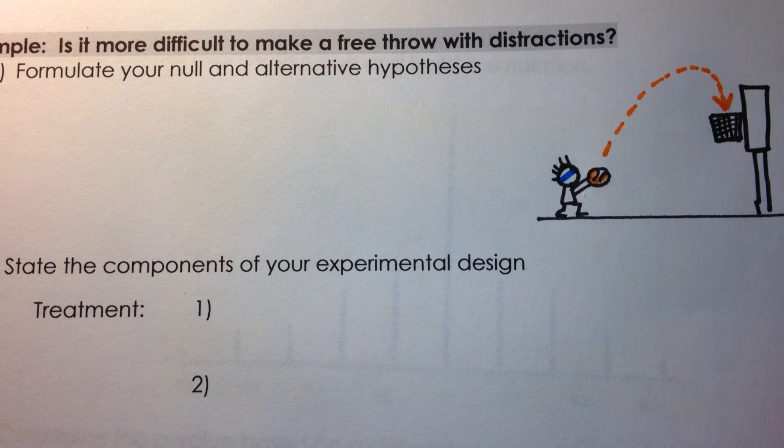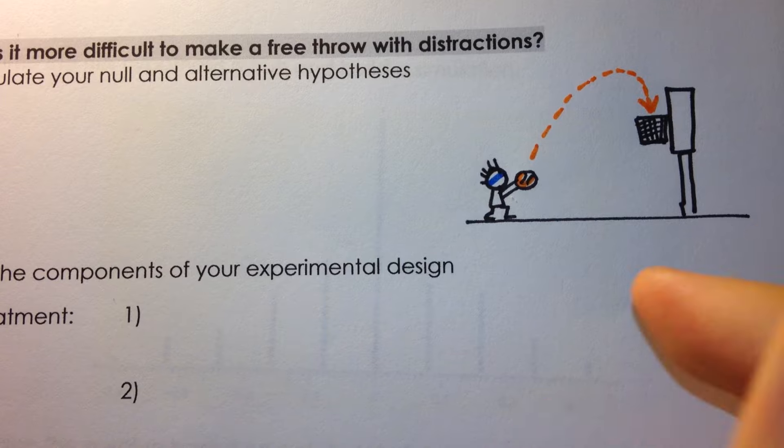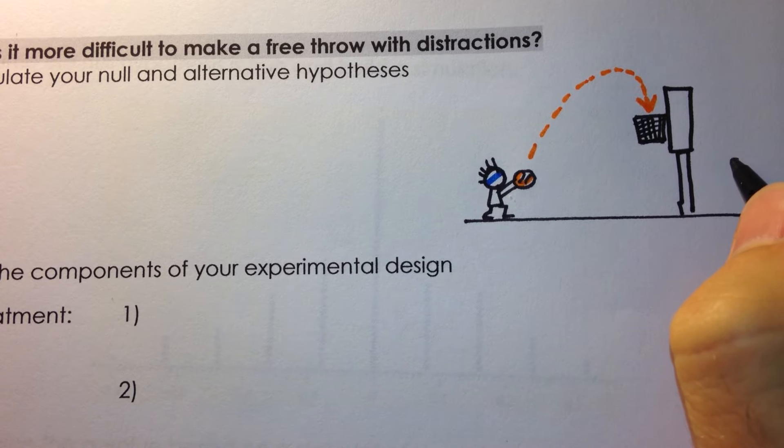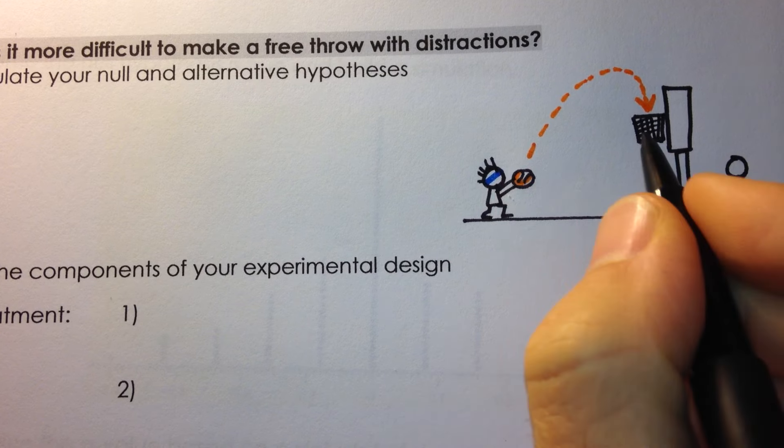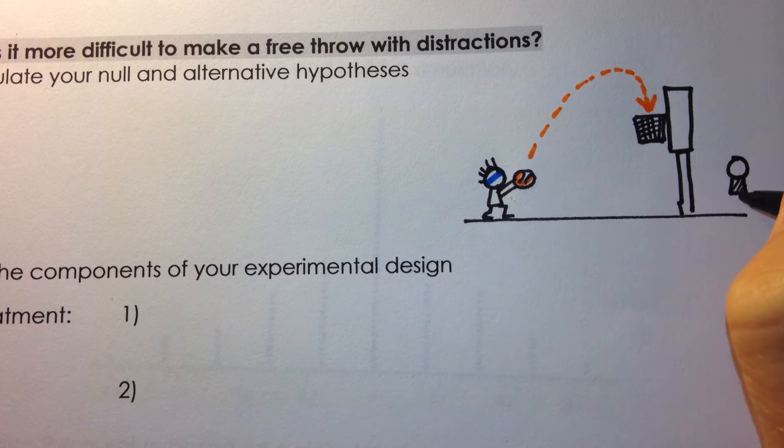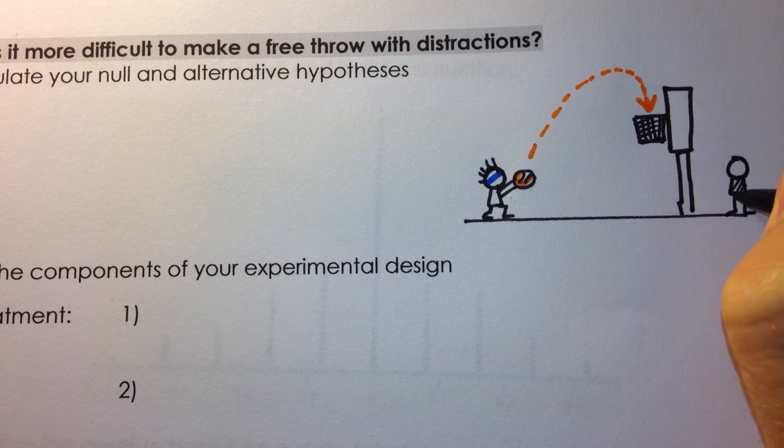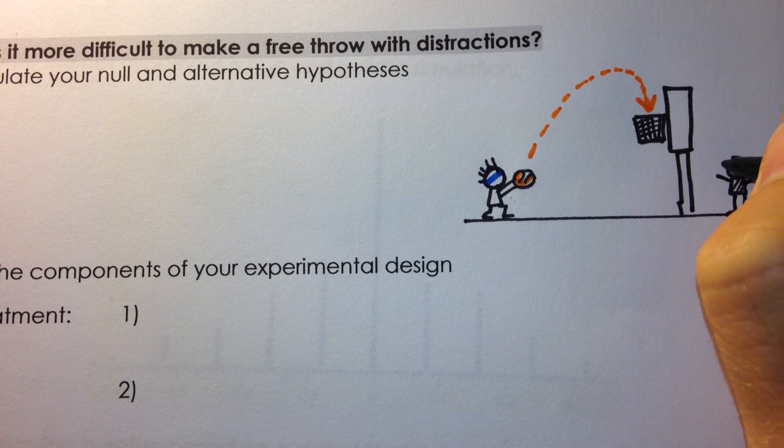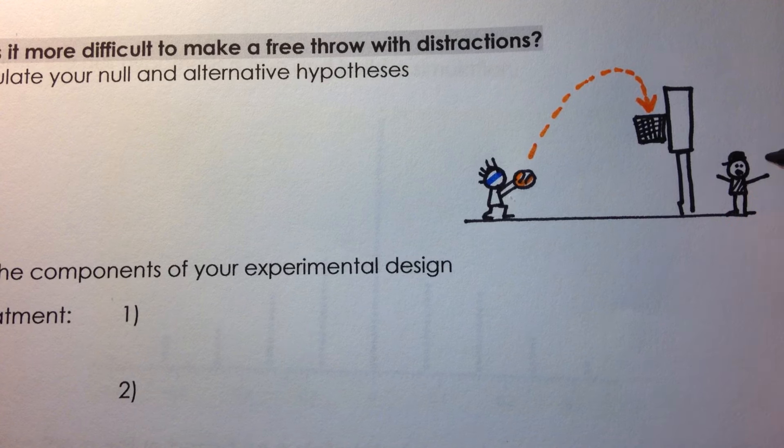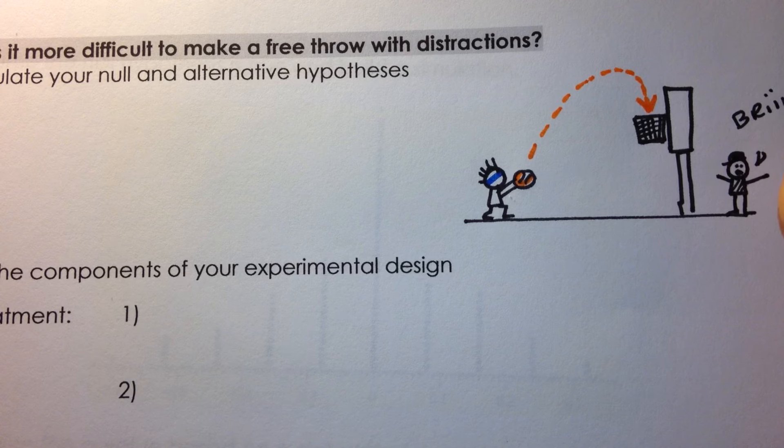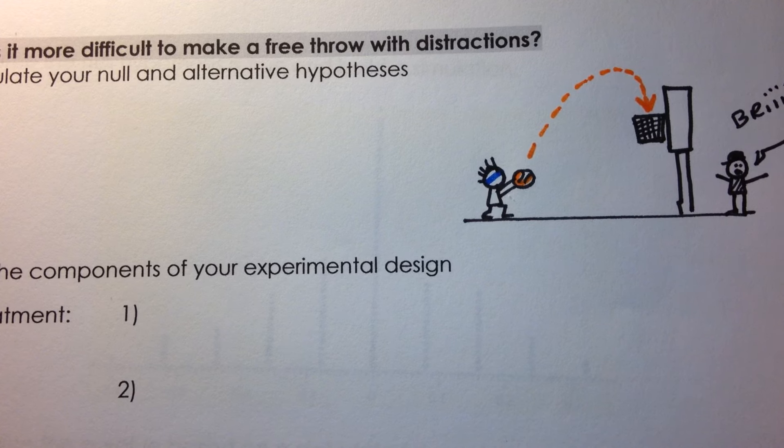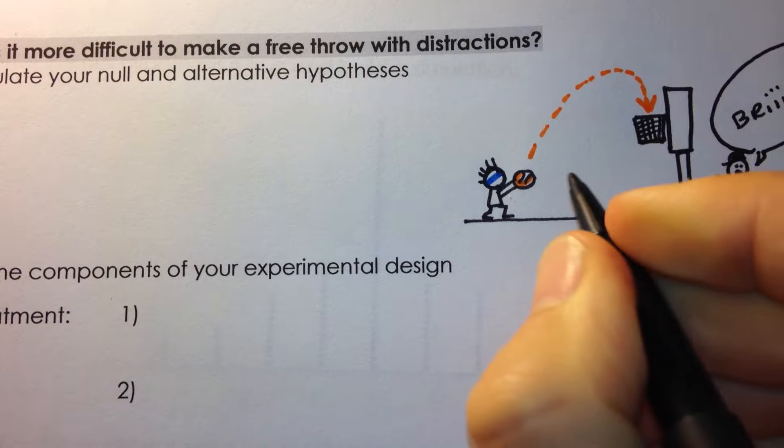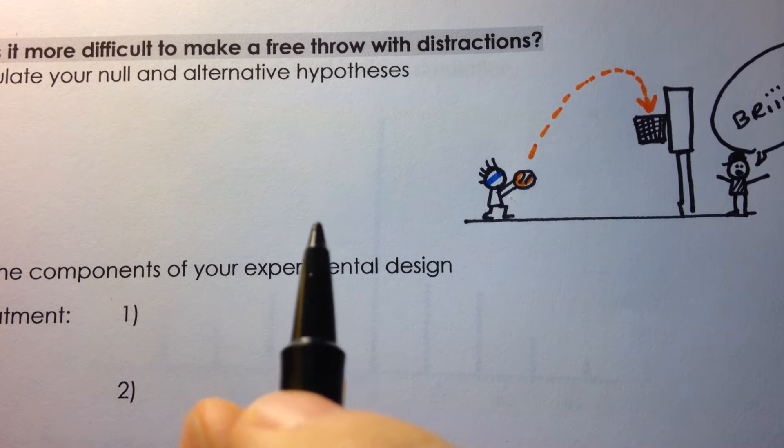However, as often happens in the competitive game of basketball, there is a fan behind the basketball court or behind the net. And he's shouting whatever he can in order to distract our basketball player.